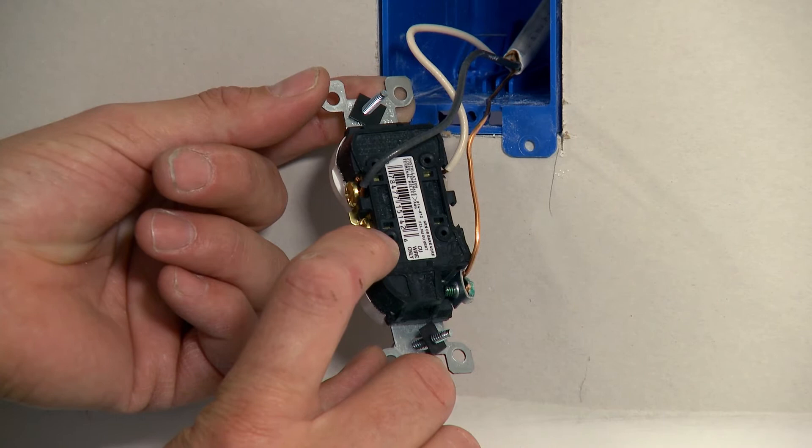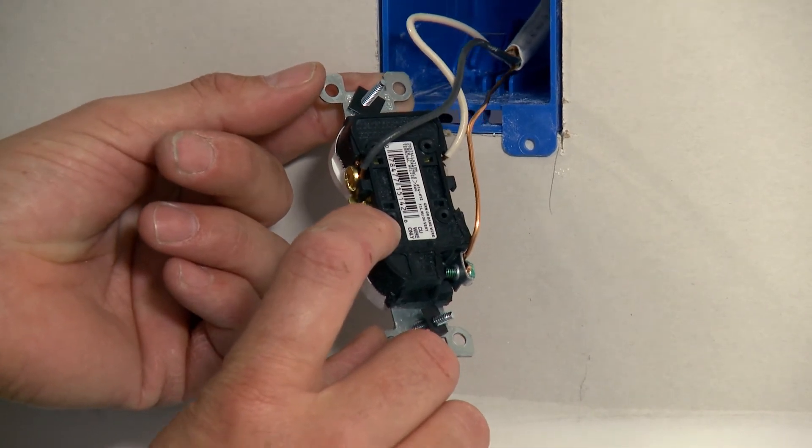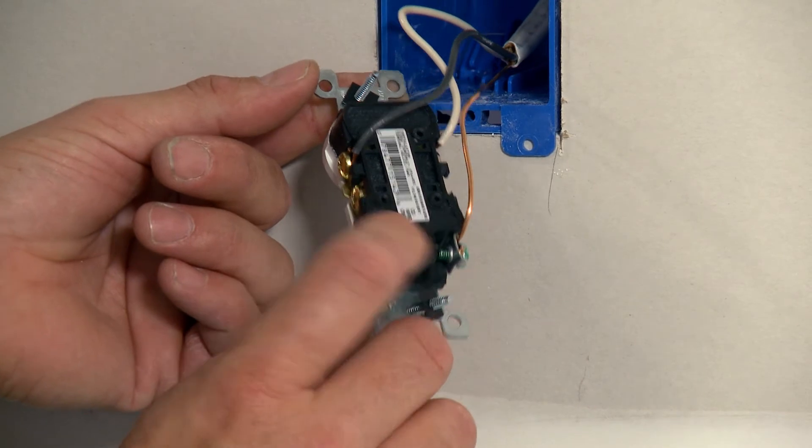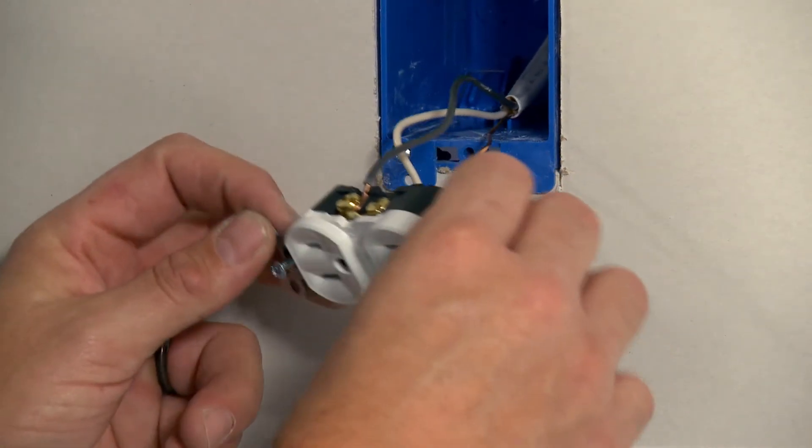Those small holes are for inserting the wires into a push kind of clamp type system. I rarely, if ever, use those and they're only good for 14 gauge. So if it's by chance a 12 gauge for some reason, your wiring, it won't fit in there anyways. I'm a big fan of the screws.